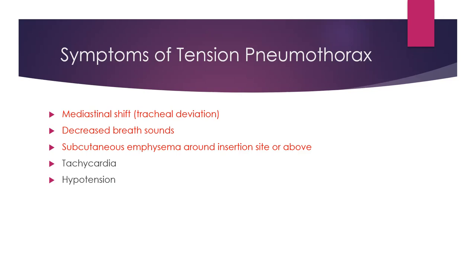The other thing is something called subcutaneous emphysema, where air gets trapped under the skin. This can happen around the insertion site, or if there's a puncture wound or blunt trauma to the chest. Because air rises, you can actually get subcutaneous emphysema up into the neck area. Those are the three classic things to look for. Tachycardia and hypotension are kind of later signs. Also, if your chest tube becomes clogged, kinked, or dislodged in any way, you can actually see your patient develop signs of pneumothorax depending on the severity.